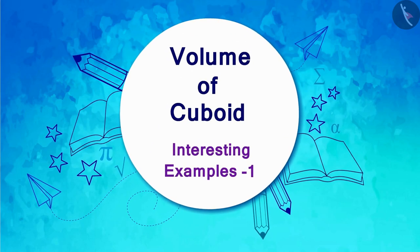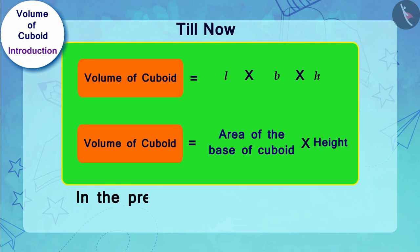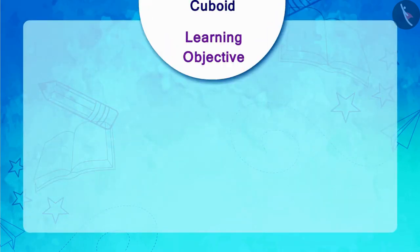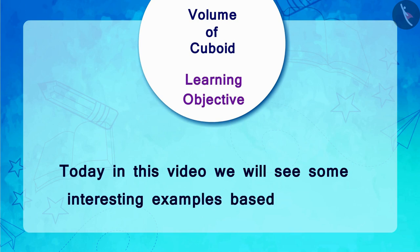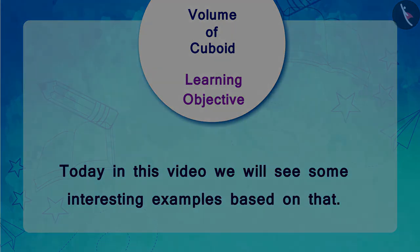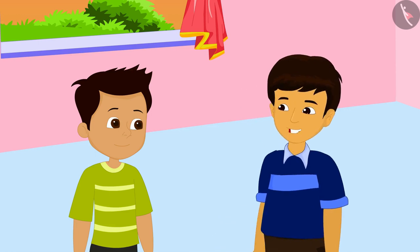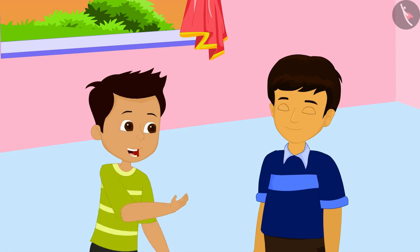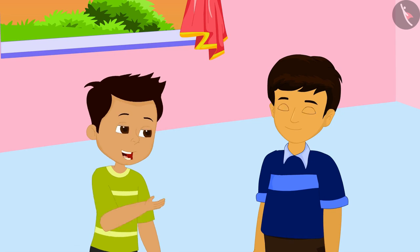Hello friends, we welcome you all to this video. In the previous video we studied about the volume of a cuboid. Today in this video we will see some interesting examples based on that. Thomas, do you know how important air is in life? Yes, Manas, air is a very important component for the survival of all species.